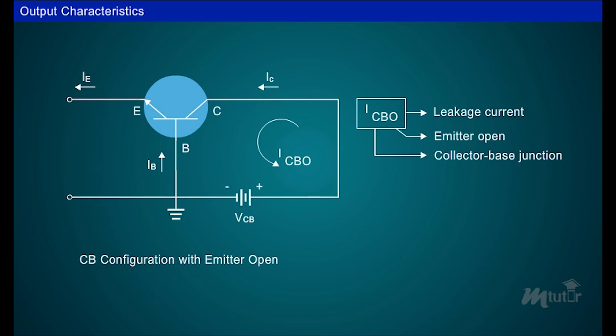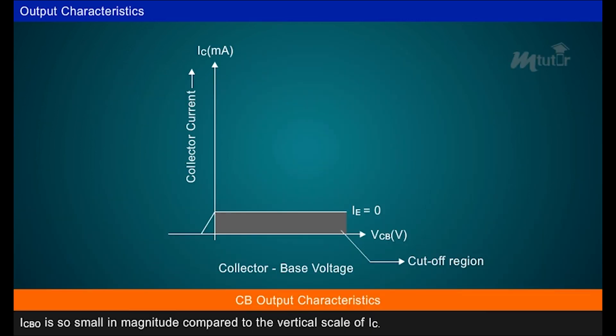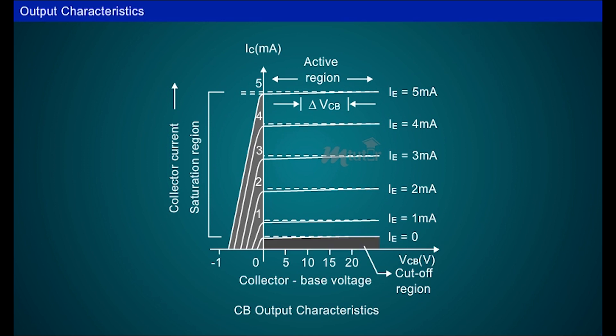If the emitter current is zero, the collector current is simply ICBO as shown in figure. This current is so small in magnitude compared to the vertical scale of IC that it virtually appears on the exaggerated scale for understanding purpose. The region below the curve IE is equal to zero is known as cut-off region where the collector current is nearly zero. The saturation region is that region of the characteristics which is to the left of VCB is equal to zero volts.